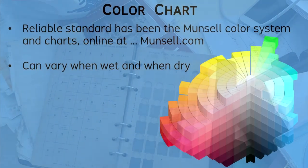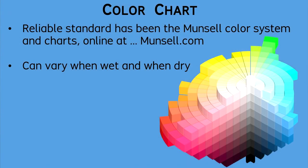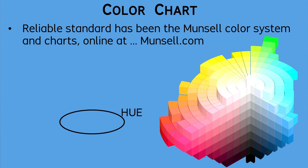The Munsell color system has been the most popular standard for archaeologists. It accounts for three aspects of color in terms of hue, value, and chroma. The hue can be described in principal categories of red, yellow, blue, and others, each with subdivisions into a total of 100 hues.